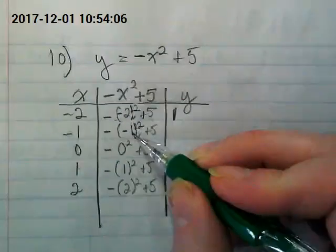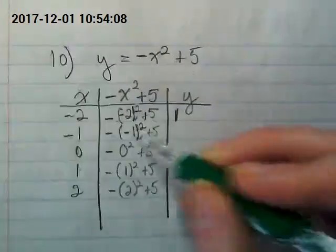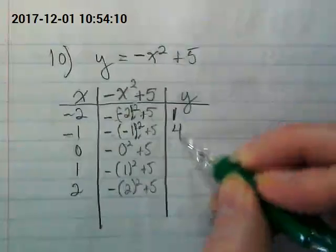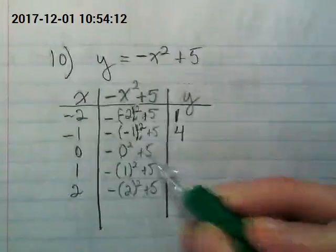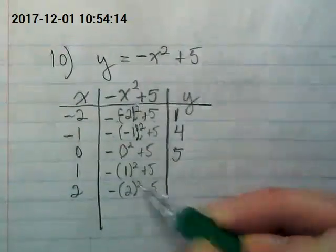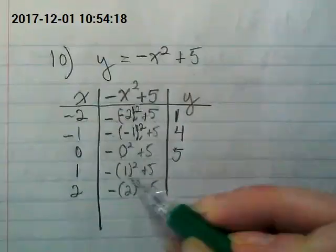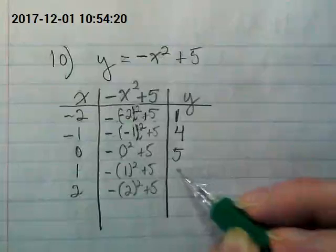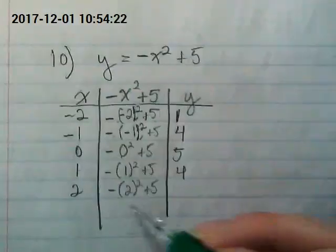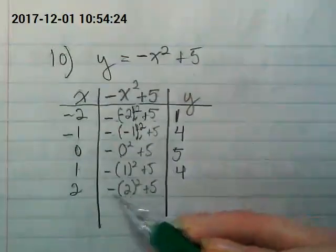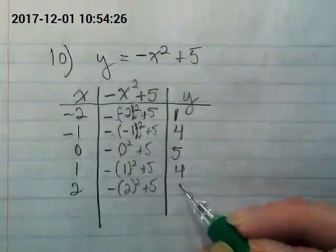This is going to become positive one times another negative. So we have negative one plus five is four. Zero plus five is five. One times negative one is one and then plus five again is four. And then we end up with four times negative plus five, we get one.